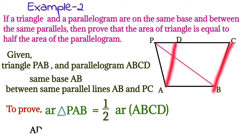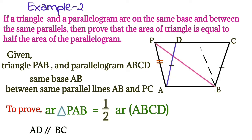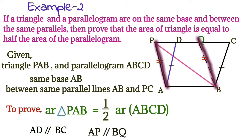We can see AD is parallel to BC, but for line AP there is no parallel line. So let's construct a line from B to PC, represented as Q — that is, draw a line from B to PC that is parallel to AP, written as AP parallel to BQ. By this, we obtain another parallelogram ABQP.